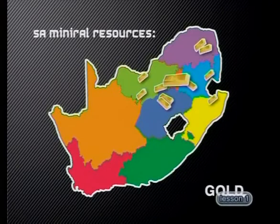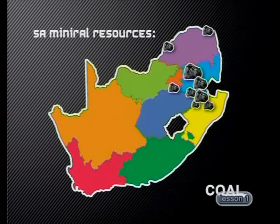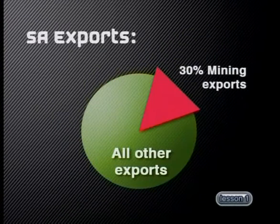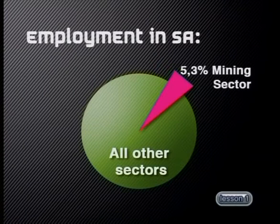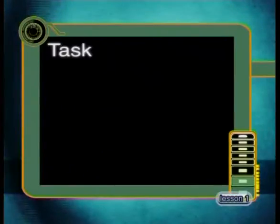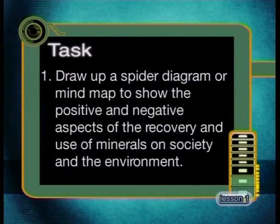South Africa is very fortunate in having some of the best reserves of minerals in the world. This map shows where most of our important minerals are mined. These diagrams illustrate the important role that minerals play in our economy — almost one-third of our income from exports is earned from mineral exports, and 5% of all people employed in activities other than agriculture are employed in the mining industry. Here's a task for you: draw up a spider diagram or mind map to show the positive and negative aspects of the recovery and use of minerals on society and the environment. In our next lessons in this series, we will look more carefully at some of the key minerals that we mine and use in South Africa, and explore more fully how they are mined and processed and the impacts both negative and positive that they have in our country.